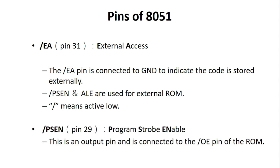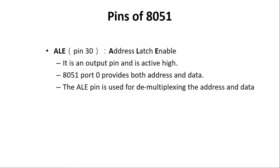The PSCN bar pin stands for Program Strobe Enable. It is an output pin connected to the Output Enable of the ROM. Whenever we want to read from external ROM, this pin is made low. When PSCN bar goes low, the Output Enable of ROM is also made low, and the data to be read from the ROM location becomes available on the data bus to be read by the CPU.